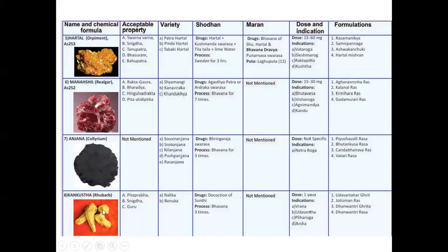Then Kankushta, that is Ruvar. This is Pita Prabha. You can see the yellow color. Snigdha and the Guru. Varieties are Nalika and Renuka. The Shodhana is done with the decoction of Shunti. Three times Bhavana is given. Marana of Kankushta is not mentioned.